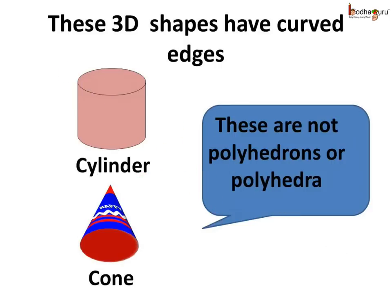These 3D shapes have curved edges and even their faces are not similar. Hence we can say these are not polyhedrons, or polyhedra — the plural of polyhedron.